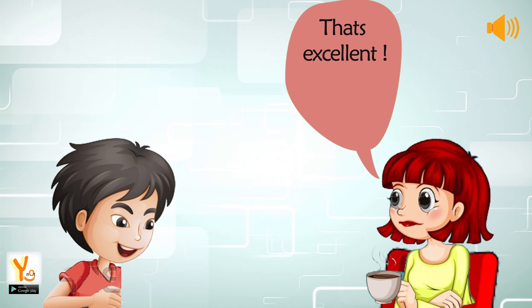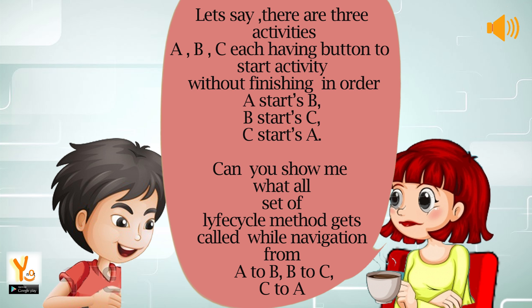The interviewer said: That's excellent. Let's say there are three activities: A, B, C — each having a button to start the next activity without finishing, in order. A starts B, B starts C, C starts A. Can you show me what set of lifecycle methods gets called while navigating from A to B, B to C, and C to A?